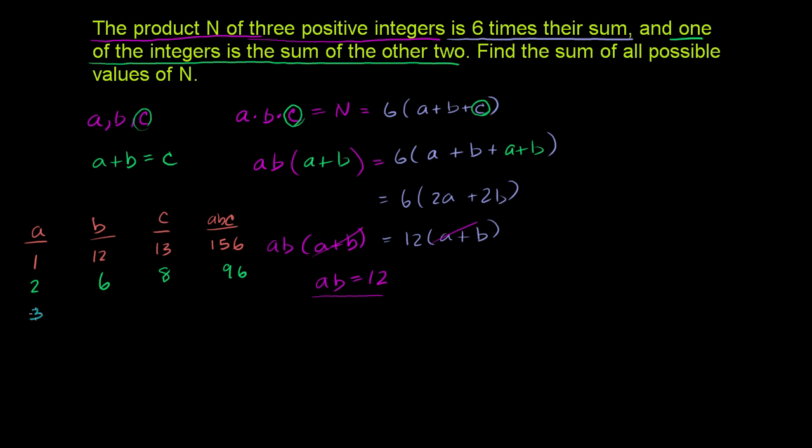Then we could try 3 and 4. 3 plus 4 is 7. 3 times 4 is 12, times 7. And actually, I should have known that a times b is always 12. So you just have to multiply 12 times this last column. 12 times 7 is 84.